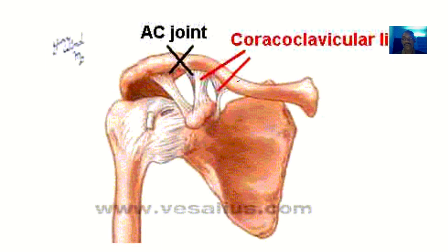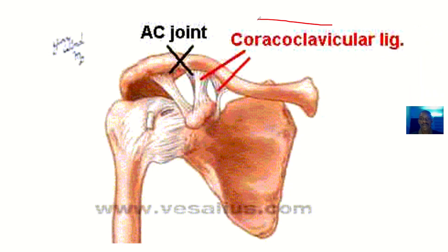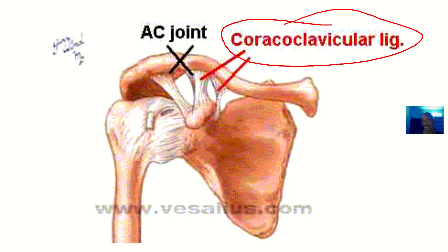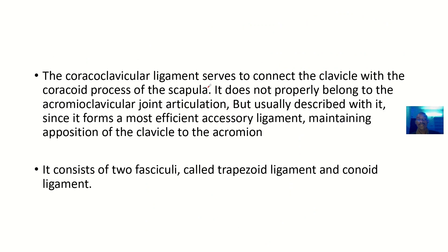Now we'll discuss the anatomy of the coracoclavicular ligament. You can see the coracoclavicular ligament here — actually two ligaments make up the coracoclavicular ligament, and you can see them extending from the coracoid process to underneath the clavicle. The coracoclavicular ligament serves to connect the clavicle with the coracoid process of the scapula.